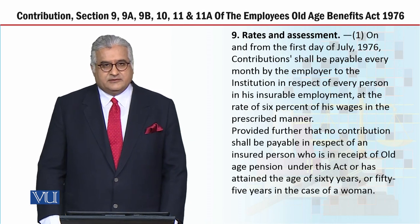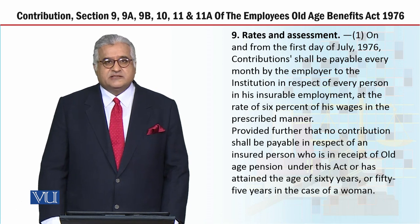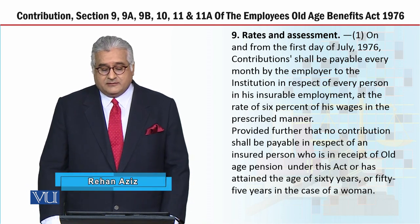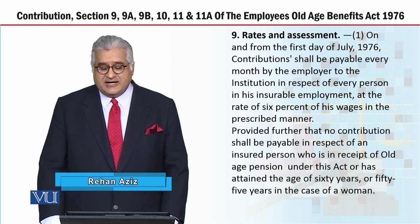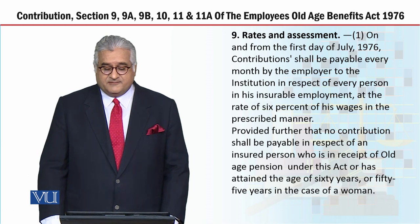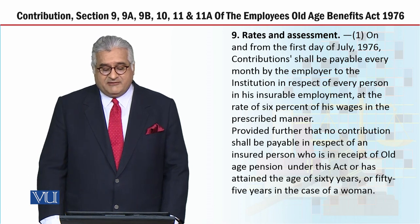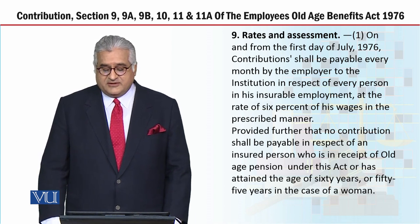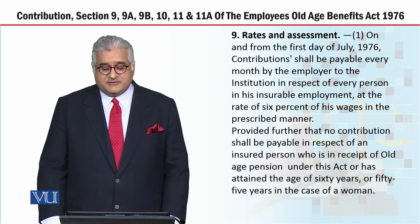Section 9 — Rates and Assessment. Section 9, Subsection 1: on and from the first day of July 1976, contributions shall be payable every month by the employer to the institution in respect of every person in his insurable employment at the rate of six percent of his wages in the prescribed manner.